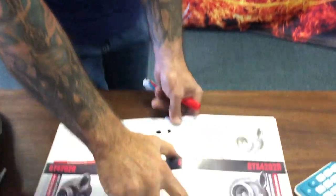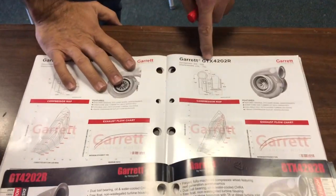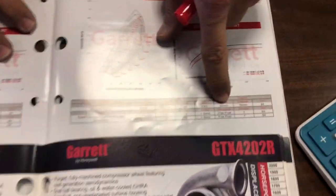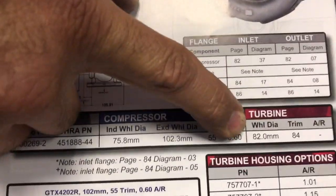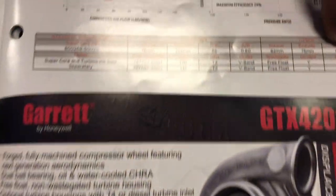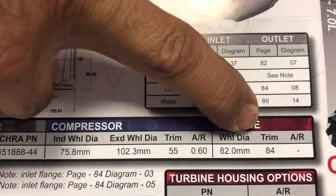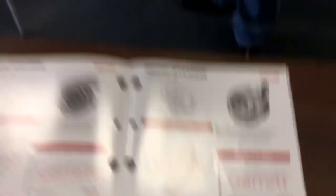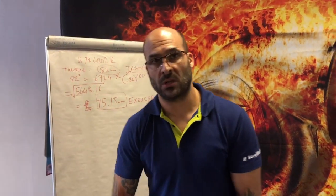Now let's go to Volume 8, the newer catalog - GTX 4202, same turbocharger. Garrett gives you the answer directly: 82mm inducer. Going back to the older book: 82mm inducer, trim 84, 75mm exducer - and in the new book, 75mm. So that is exactly how trim works.